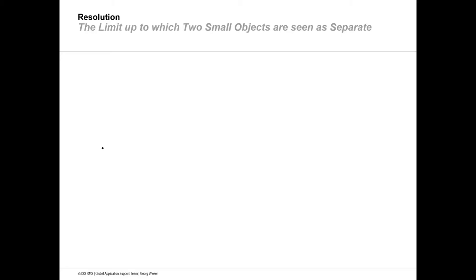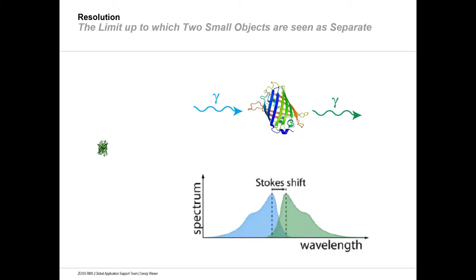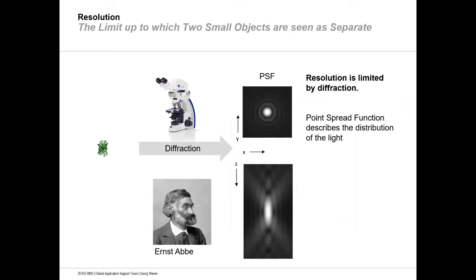A GFP molecule can be excited with a blue laser light and it emits green photons back due to the Stokes shift. When light of a single fluorophore travels through an optical instrument, it cannot be detected as it is — the light is distributed in a pattern specific to the optical instrument, called the point spread function. This is due to diffraction, and the light originating from a single source expands spatially, so the structure will appear a lot larger than it originally was.